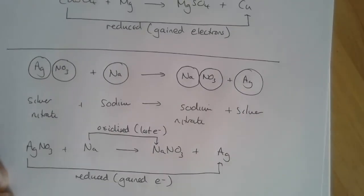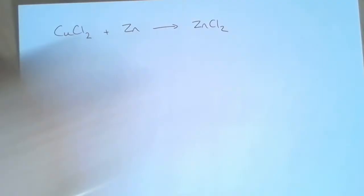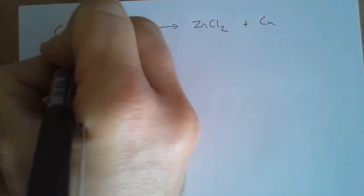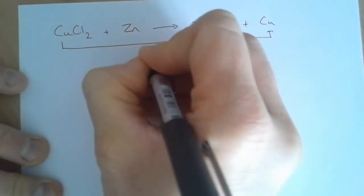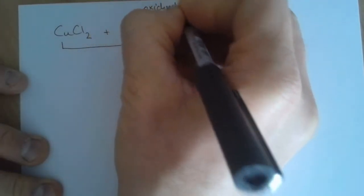Let's have a look at just doing some of these as symbol equations now. Here's another one: copper chloride reacting with zinc. Zinc is a more reactive metal than copper, so we'd produce zinc chloride and copper. Again, we can say that the copper has been reduced and that the zinc has been oxidized.